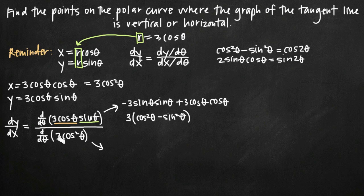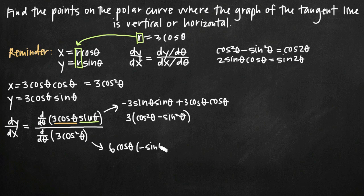For the denominator, the derivative of 3 cosine squared theta uses the chain rule. We multiply the exponent 2 by the coefficient 3 to get 6 cosine theta, leaving the inside function cosine theta alone, then multiply by the derivative of the inside function. The derivative of cosine theta is negative sine theta, so we get negative 6 sine theta cosine theta.